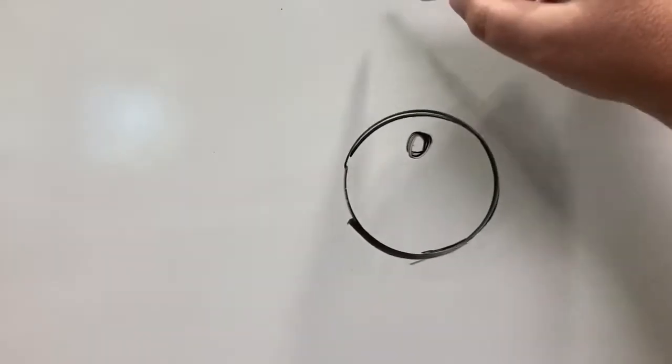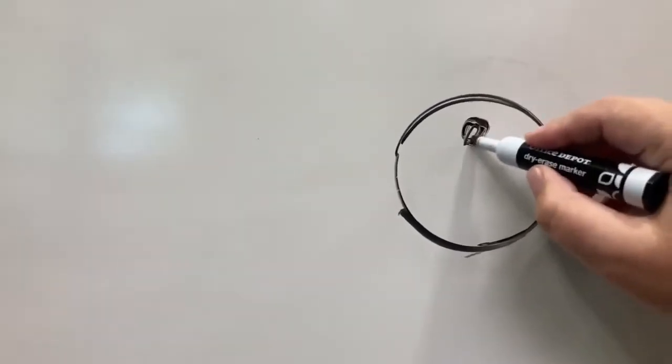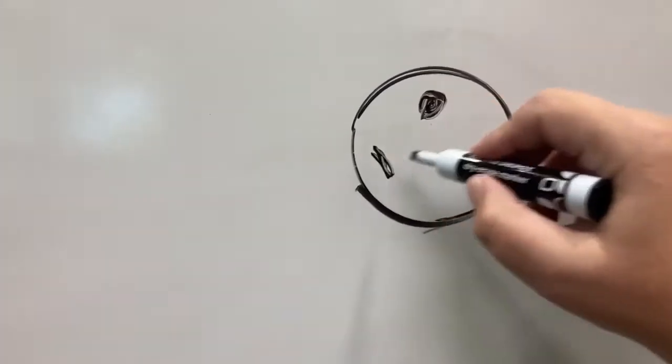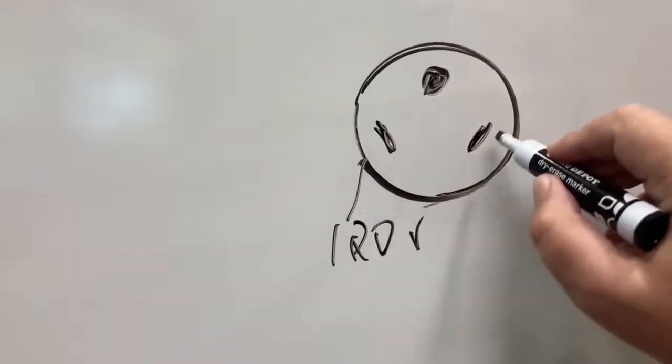All right, so your 30-amp plug-in for the trailer has one hole for ground, has one for hot, one for neutral. All right, so this is your 120-volt and this is neutral.